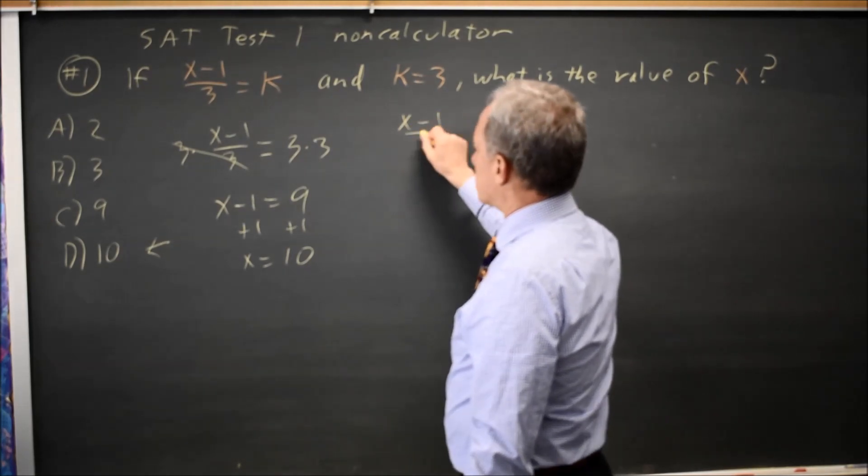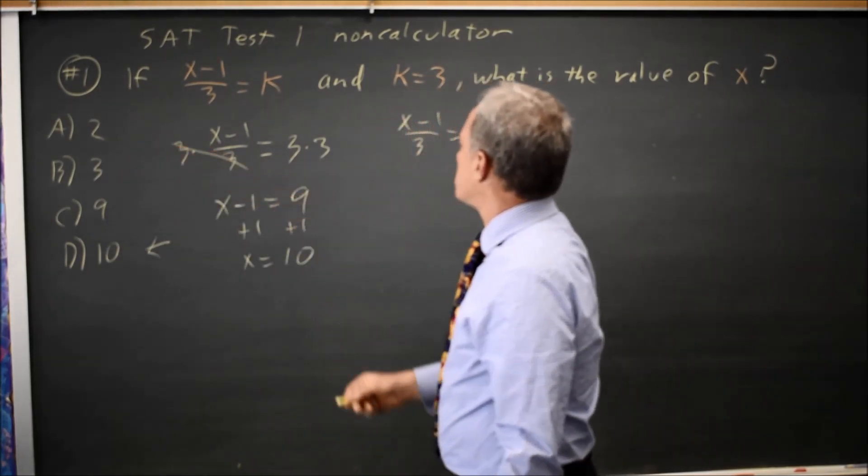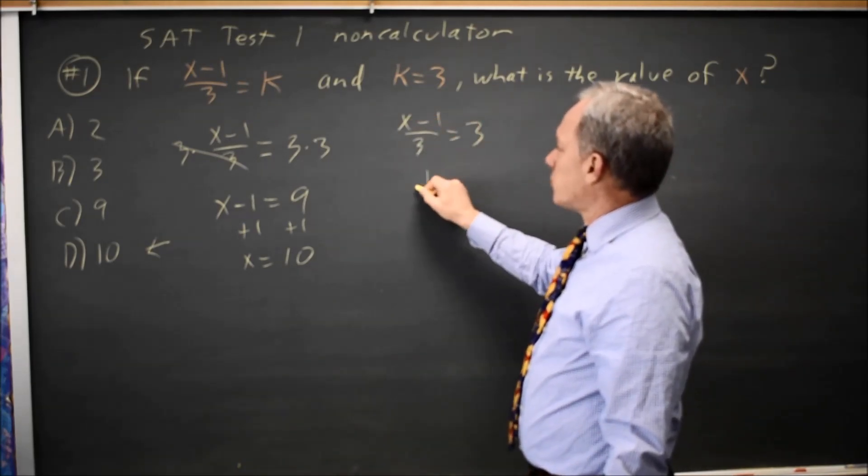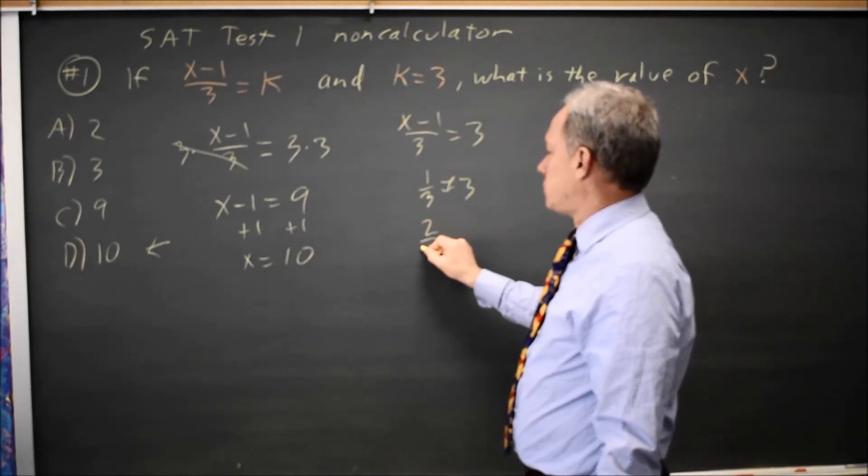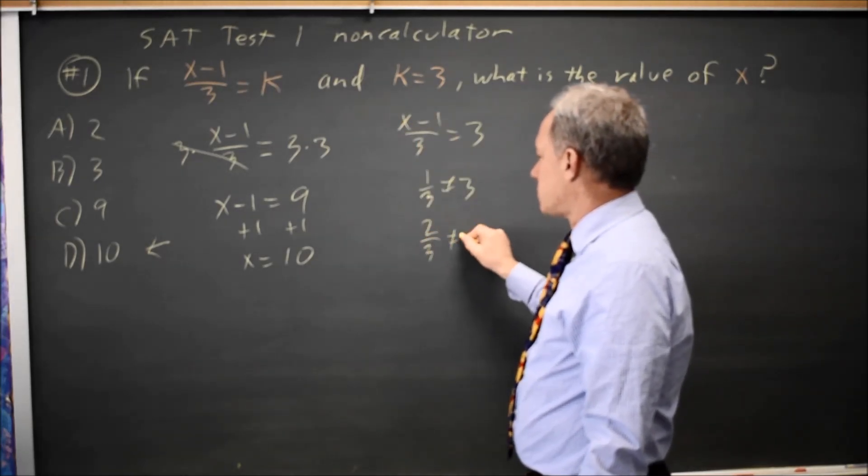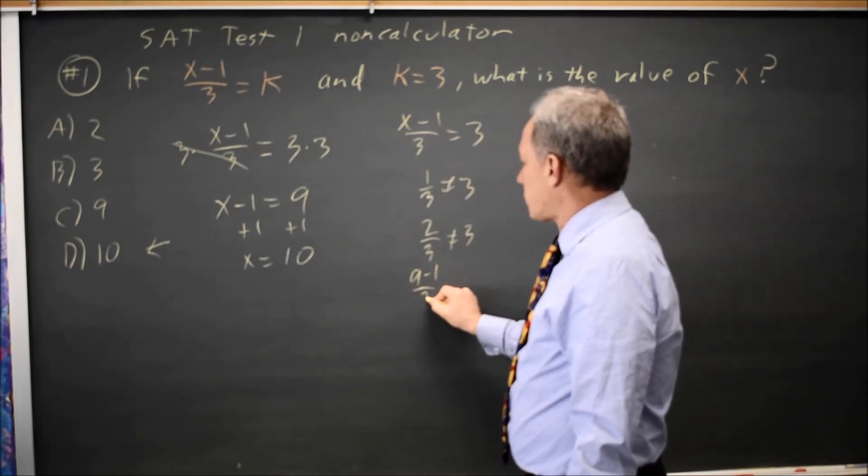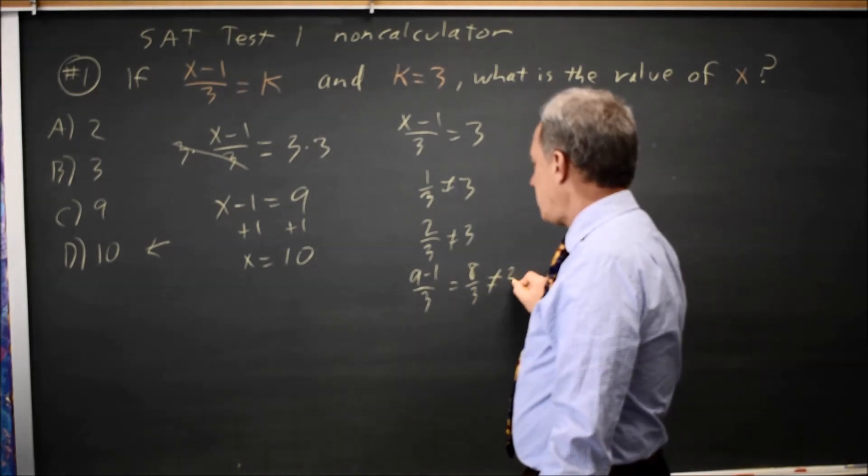Or from x minus 1 over 3 equals 3, I can substitute in answer choices and see which one works. 2 minus 1 is 1, 1 over 3 is 1 third, which is not 3. 3 minus 1 is 2, 2 over 3 is 2 thirds, which is still not 3. 9 minus 1 over 3 is 8 over 3, and that's still not 3.